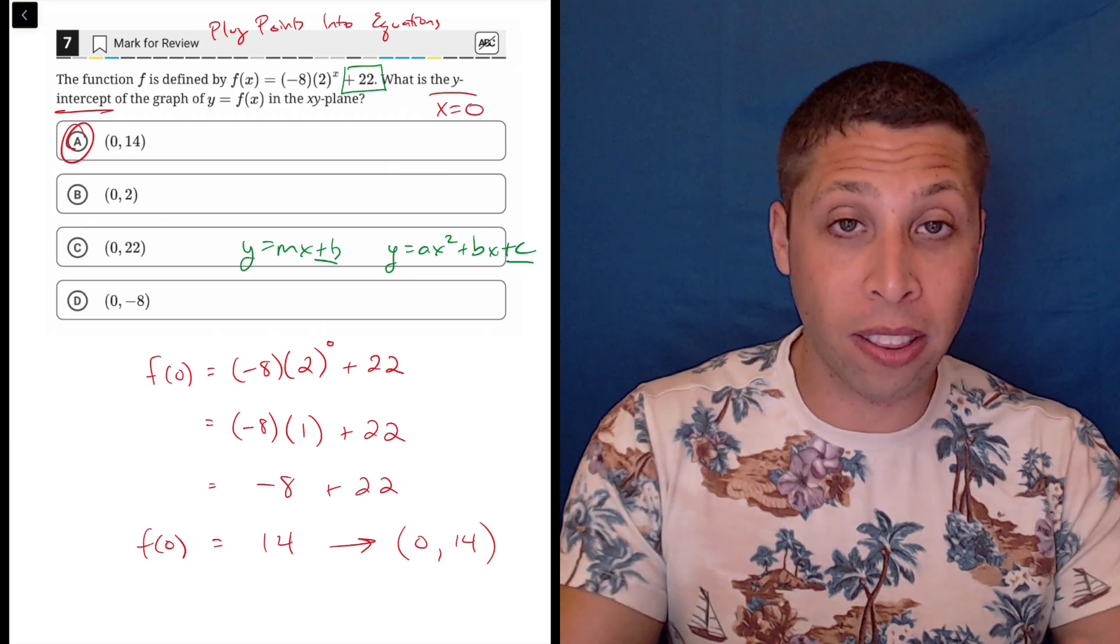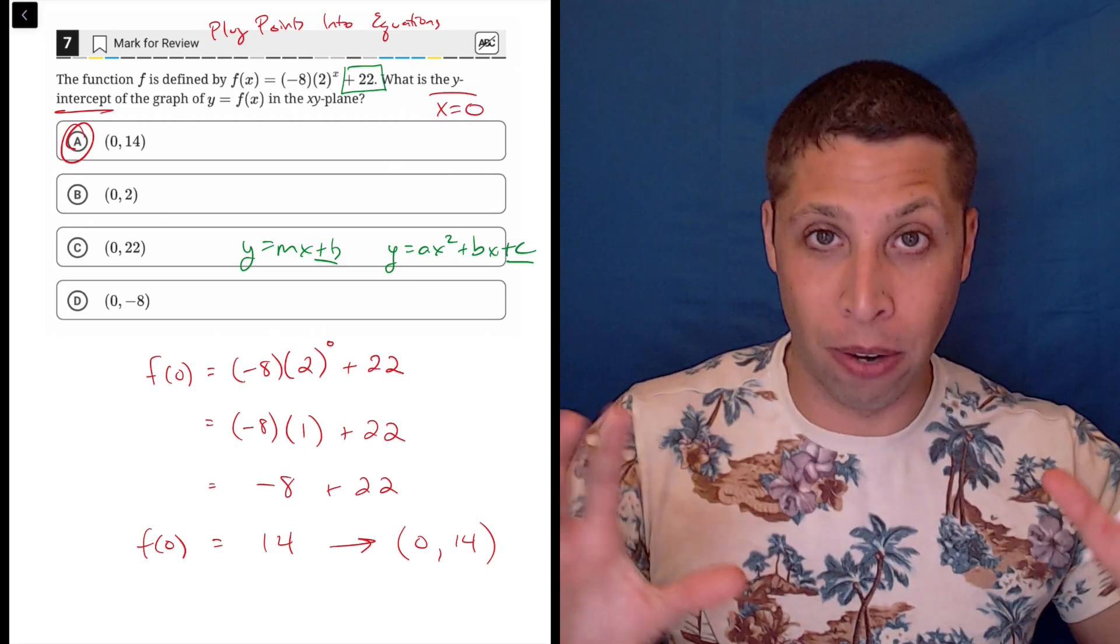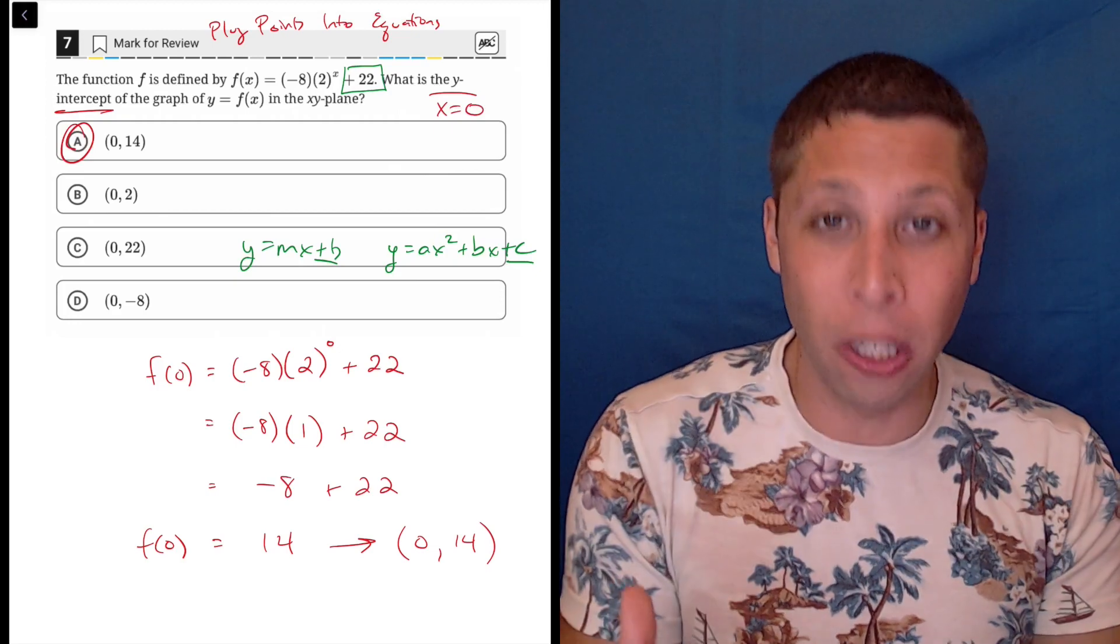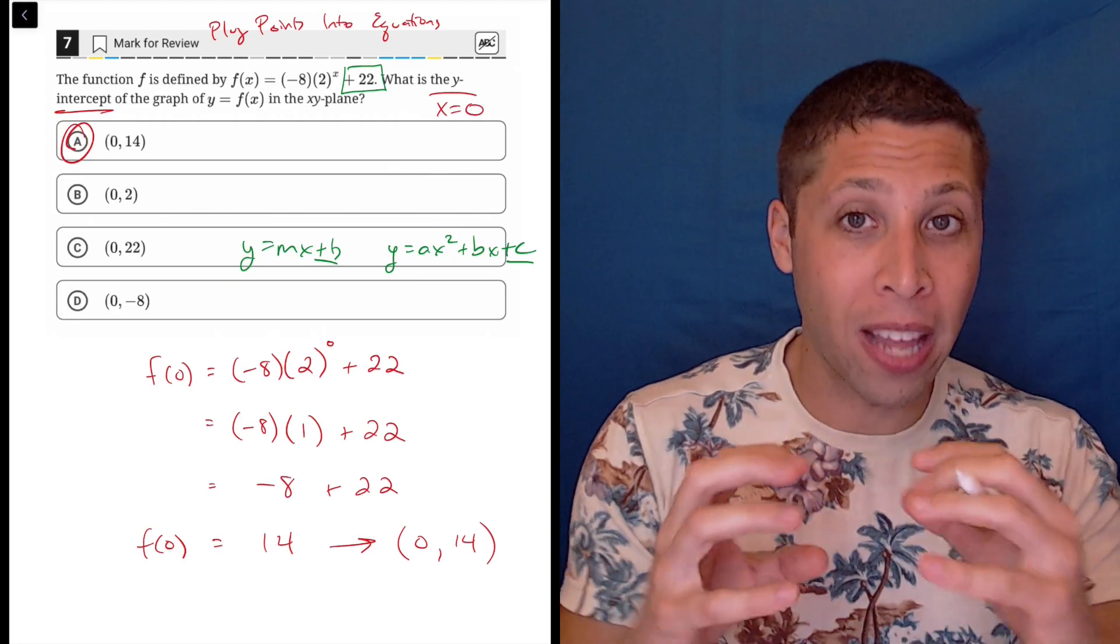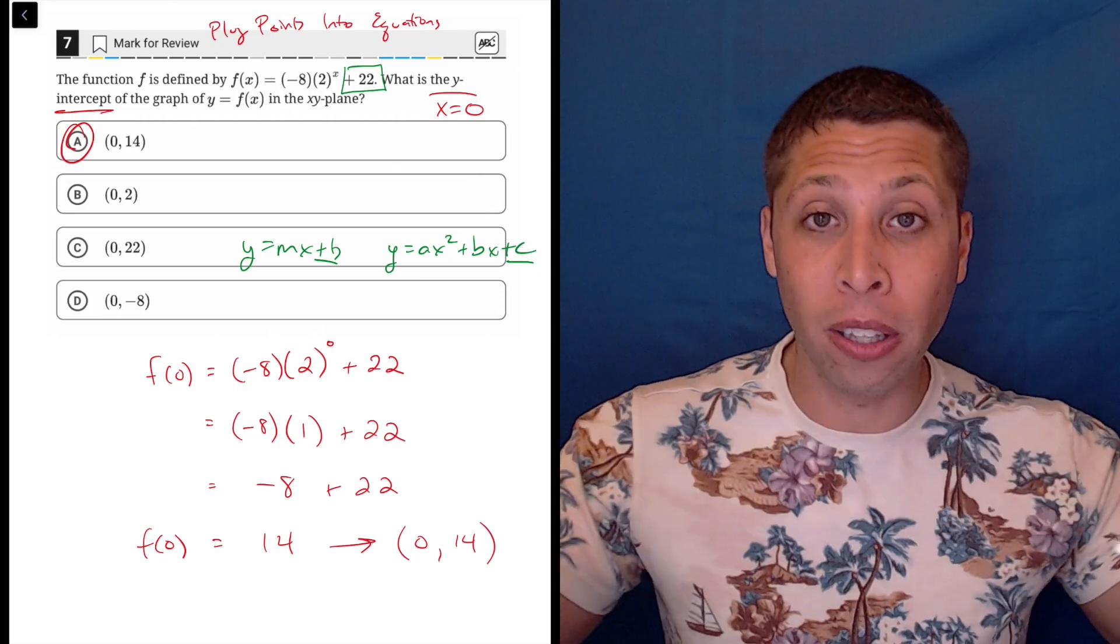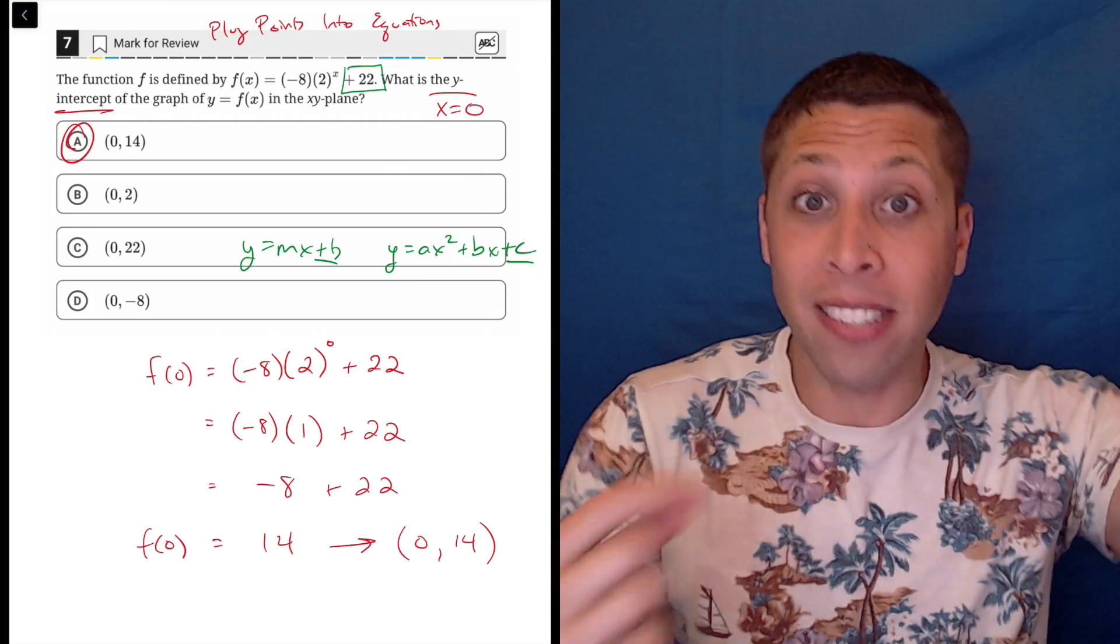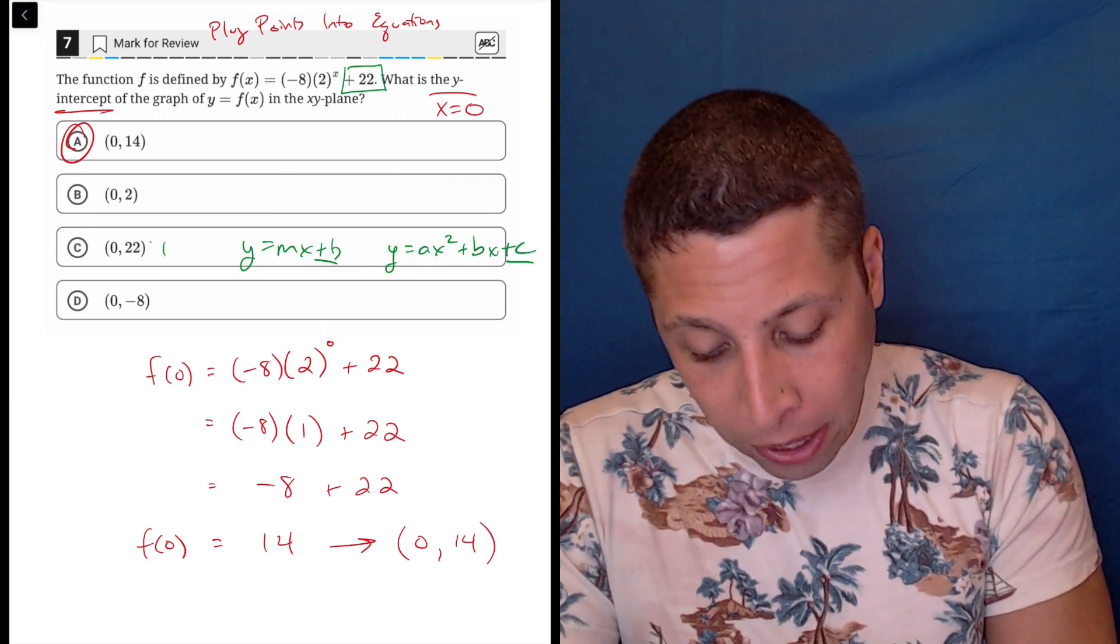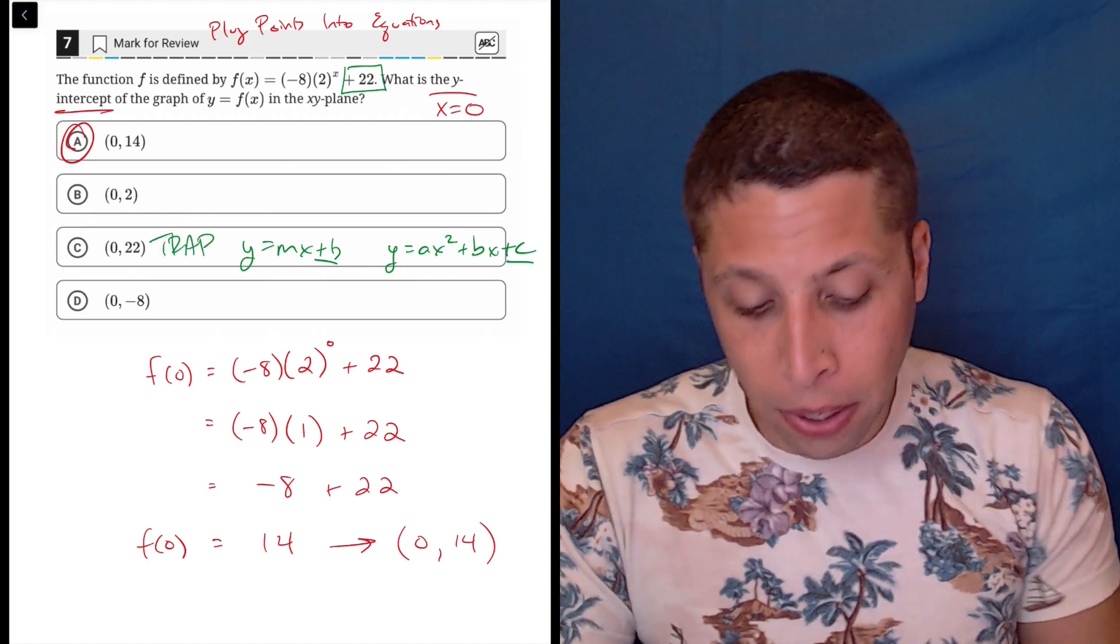But here the zero doesn't go in the X's on the main level, the bases. The X is the exponent, so this causes problems. Some of you are going to pick choice C because you're going to jump the gun and just look at that and be like, 'Oh yeah, that's where the y-intercept is.'